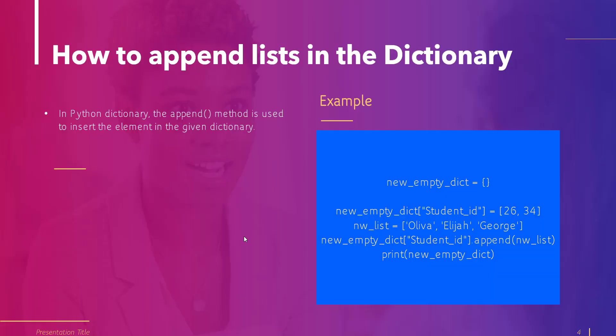In this topic we will understand how to append a list in the dictionary. In Python, append is used to add elements to an existing dictionary, and appending can be done using a list. We created an empty dictionary, then a list containing a student ID with associated values. After that we create a new list called new_list, store the elements, and use the append function to add both lists.